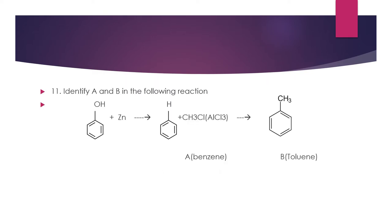Question 11: Identify A and B in the following reaction. Phenol reacted with zinc gives A; phenol reacted with methyl chloride and aluminium chloride (Friedel-Crafts alkylation) gives B. Zinc removes oxygen (as zinc oxide) to give benzene — that is product A. Benzene reacted with methyl chloride in the presence of aluminium chloride gives methylbenzene, commonly known as toluene — that is product B.